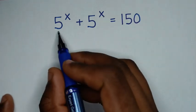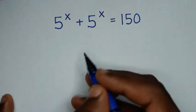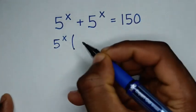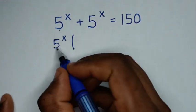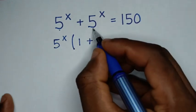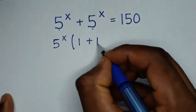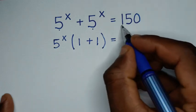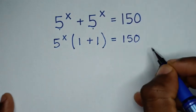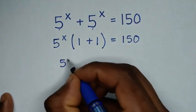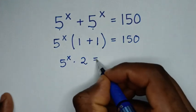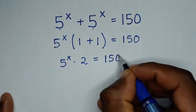Now from here, on the left side 5 power x is common, so we'll take 5 power x out of the bracket. Then 5 power x divided by 5 power x is 1, plus 5 power x divided by 5 power x is 1, bracket is equal to 150. Then it will be 5 power x times 1 plus 1, which is 2, is equal to 150.